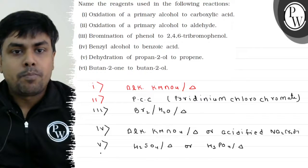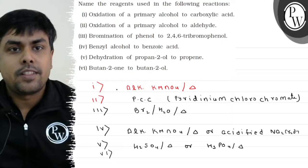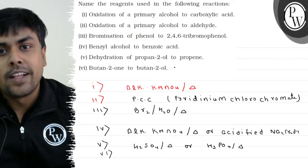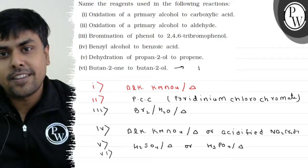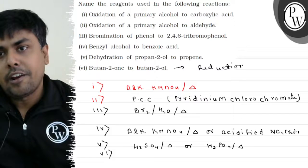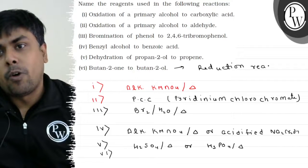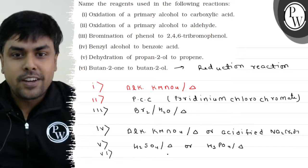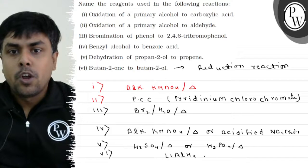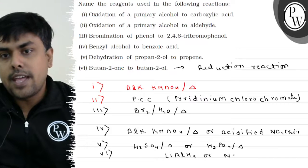Let's come to part 6 of the question: Butan-2-one to butan-2-ol. Can I say it's a reduction reaction? Reduction reaction, right? And what should I use? Reducing agent. What can I use? LiAlH4 or I can use NaBH4.